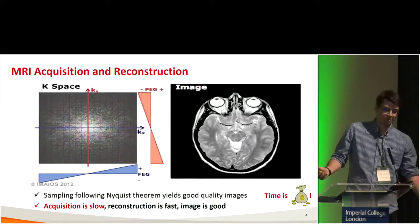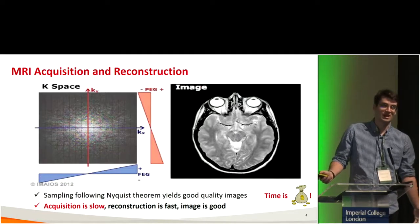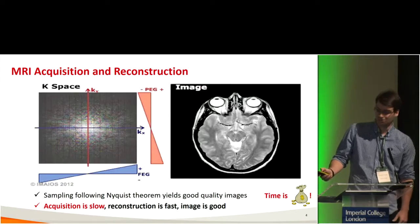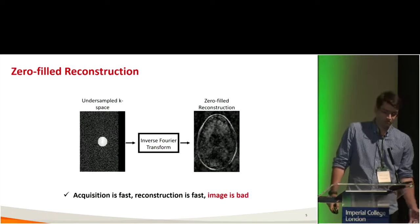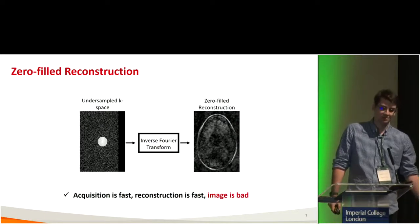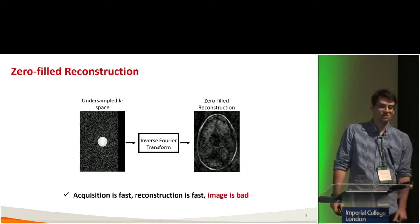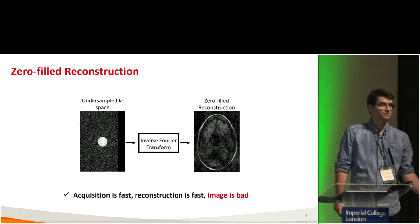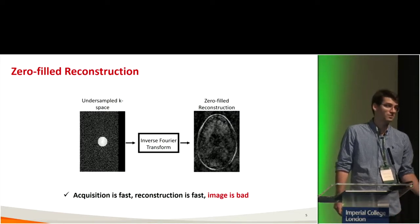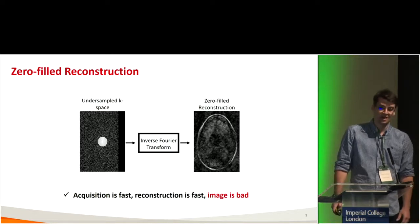If you are from a country like Brazil, we have huge wait lines to get an MRI exam, so we wish we could do things faster. If you under-sample k-space and just apply the inverse Fourier transform — called zero-fill reconstruction — acquisition will be fast because you collected fewer samples, and reconstruction will also be fast, but usually the image is bad.